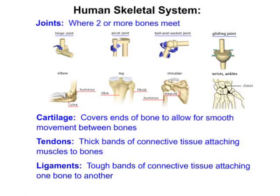Now let's look at the human skeletal system, which provides support. We'll start with joints. There are four important joints: the hinge joint — for example, the elbow; the pivot joint, seen in the leg; the ball and socket joint, such as the shoulder; and the gliding joint in the wrists and ankles, which allows movement in many directions. A joint is simply where two or more bones meet.